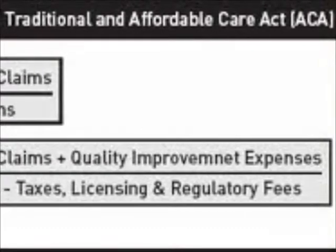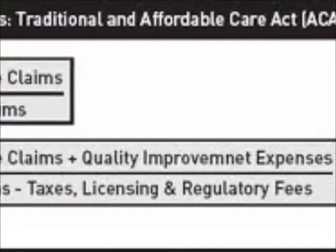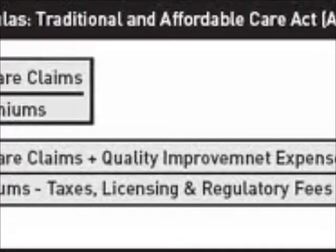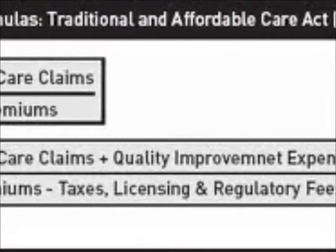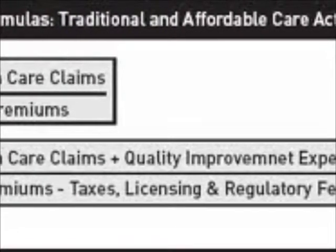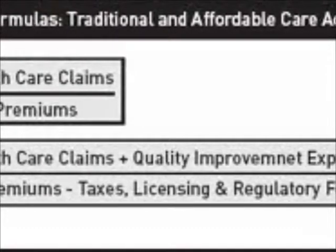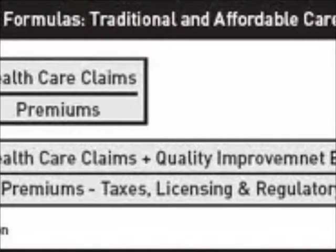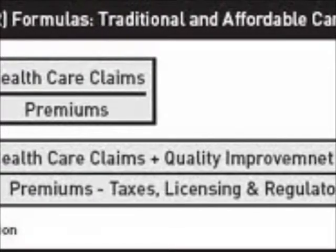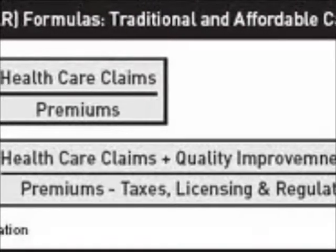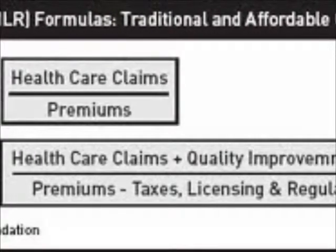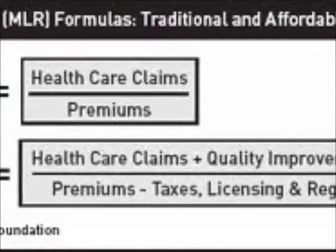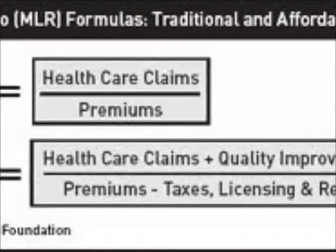Here is the formula for the Medical Loss Ratio (MLR). In traditional MLR, this is the ratio of healthcare claims to premiums. Under the ACA, MLR is defined as healthcare claims plus other quality improvement expenses, divided by premiums plus taxes, licensing, and other regulatory fees. Quality is very much a focus of the ACA.